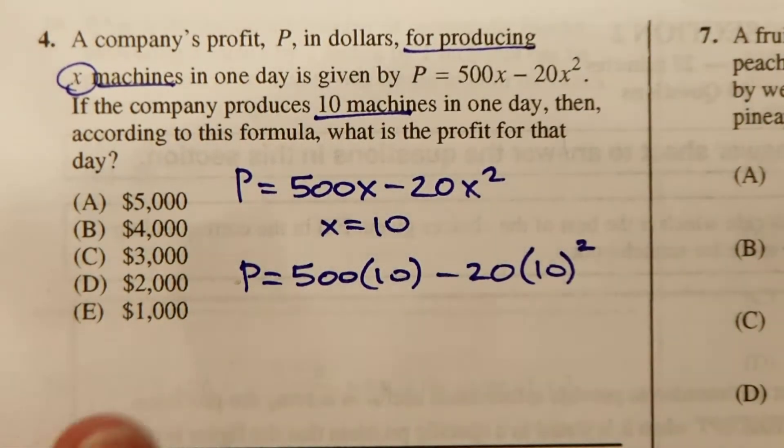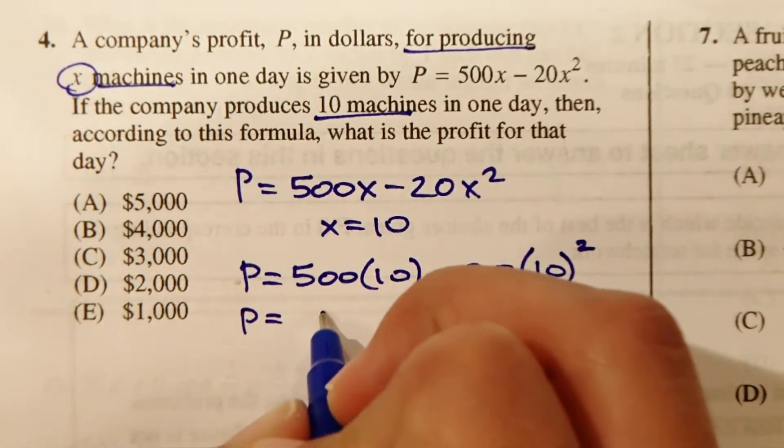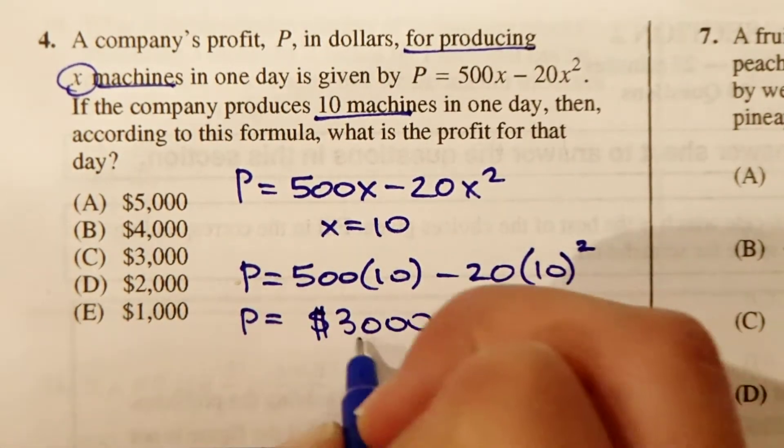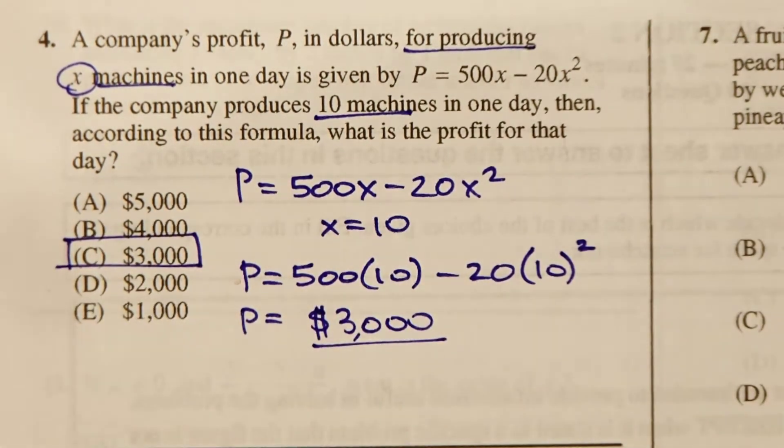So we'll enter this in, 500 times 10 minus 20 times 10 squared. And that equals 3,000. So this is going to be $3,000. So our answer is C for number 4.